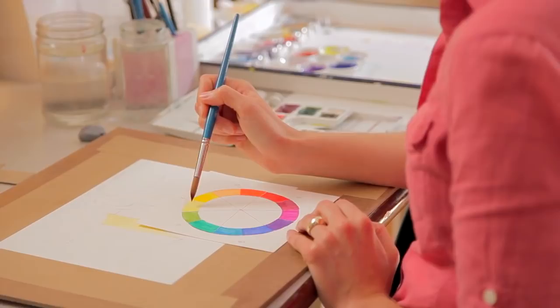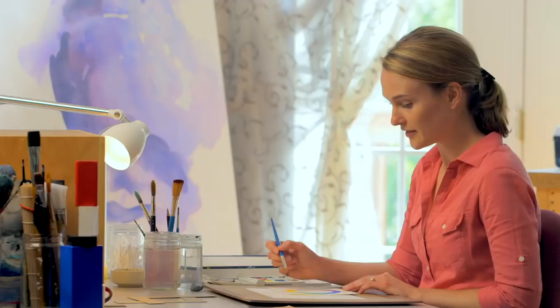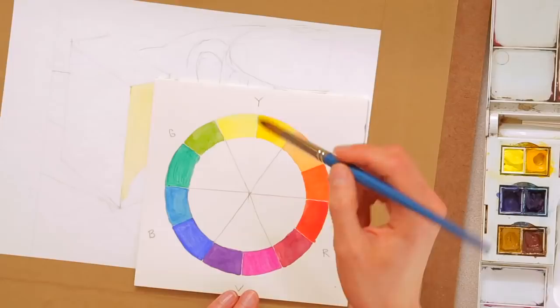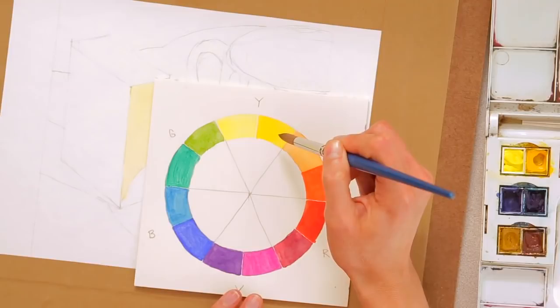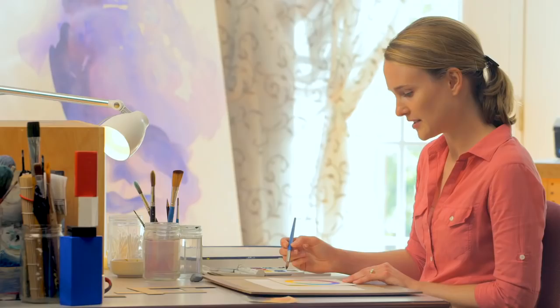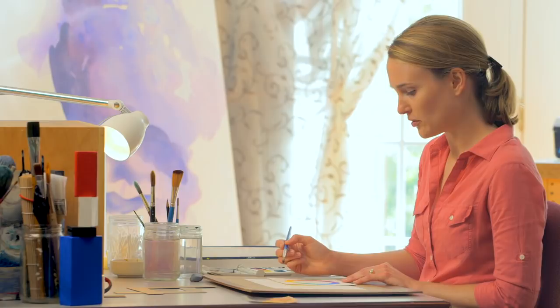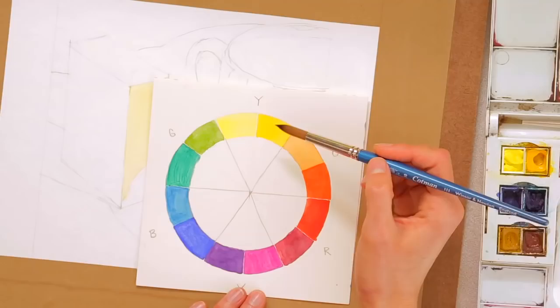And conversely, if you want a more muted green, then you could choose the opposite yellow and blue that's farthest away from green on your color wheel. Another useful tip is if you're trying to mute a color, add a little bit of its complement. So if you want a yellow that's a little bit muted, you can add a little bit of purple to it.